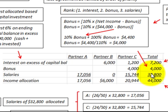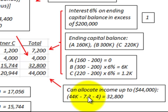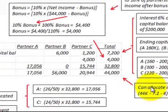Now we have to allocate salaries. The total income to allocate for the year is $44,000. We've already allocated $7,200 in interest and $4,000 in bonus. Subtracting those from $44,000 leaves $32,800 in income available to allocate as salaries based on our ranking system.